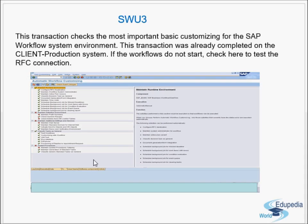On the left side of SWU3 we have different nodes: Maintain Runtime Environment, Maintain Definition Environment, Maintain Additional Settings and Services, Classify Tasks as General, and Guided Procedures — five different nodes. You have to select each one, provide details, and execute or activate it. SWU3 is the basic T-code for automatic workflow customizing, holding the most important configuration for workflow settings.